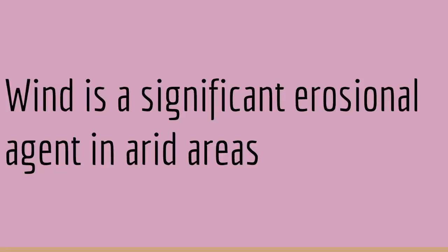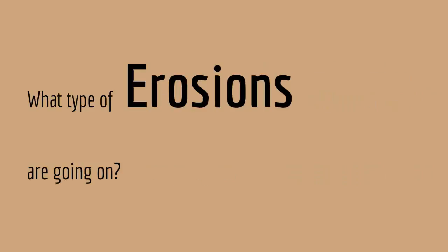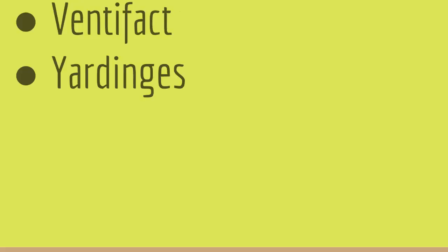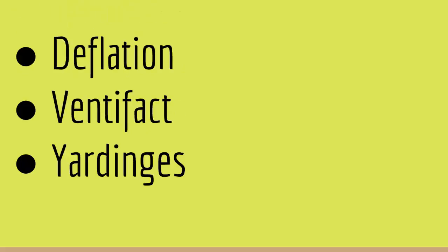Wind is a significant erosional agent in arid areas; however, wind comes after water — water is the most significant erosional agent. Unlike water, which needs streams to flow in and do erosion, wind can cover a large area without needing a stream. So how many types of erosion do we have that are due to wind? We have several types: we have deflation, we have ventifacts, and we have yardangs.